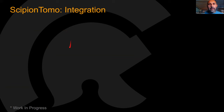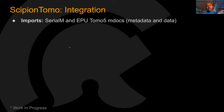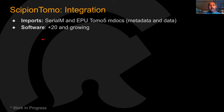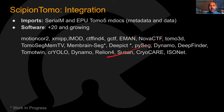Now let's focus on Scipion Tomo and the integration part. For importing, if you start a project you typically start with SerialEM or EPU Tomo5 MDoc files — we are compatible with both. We're aware that Tomo5 has some glitches in how it generates the MDoc file, and we already tolerate some of them. We integrate more than 20 tomography software packages, and this number is growing. To name several: MotionCor, XMIP, IMOD, CTFFind, EMAN, NovaCTF, and Tomo3D — it's what has ended up on our to-do list as interesting to integrate.